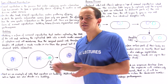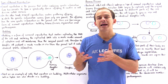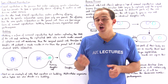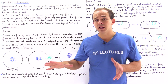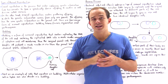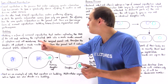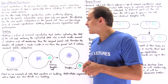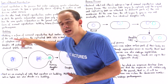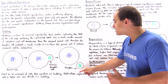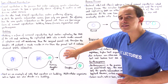Let's begin with budding. Budding is a form of asexual reproduction in which we replicate the genetic information of the parent cell and then enclose that DNA into a small portion of cytoplasm and cell membrane from the original parent cell. That's why the daughter cell produced by budding is much smaller in size but contains the same exact genetic information as the parent cell.